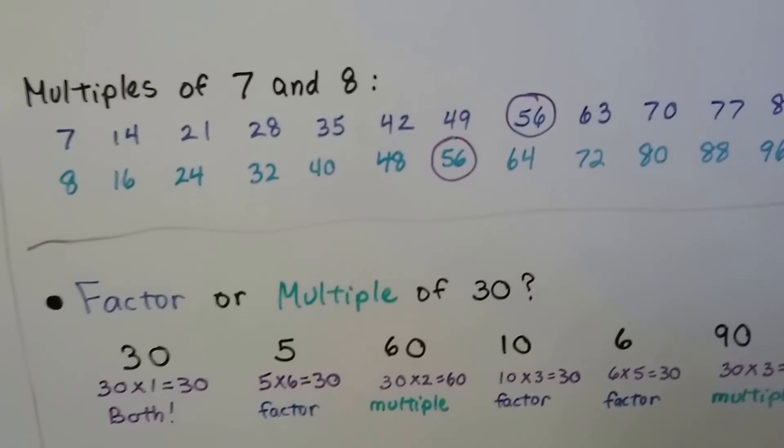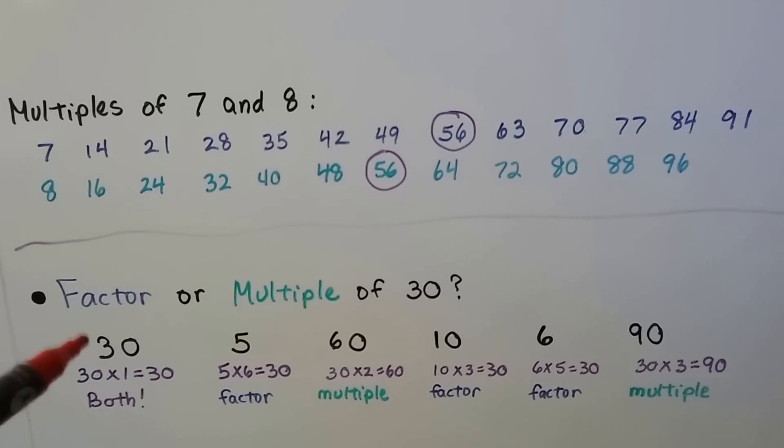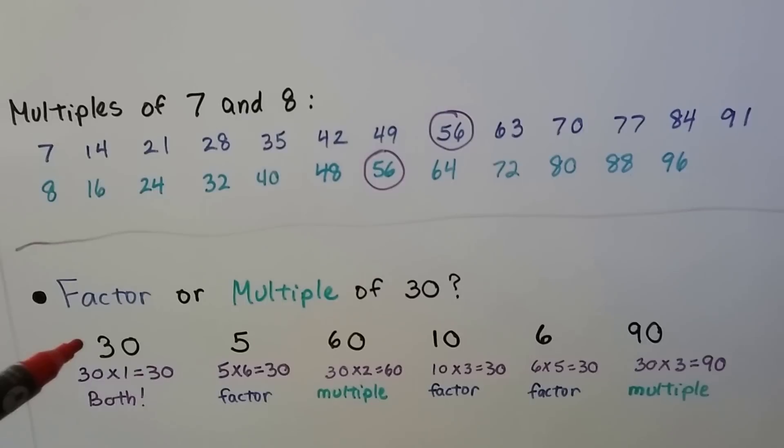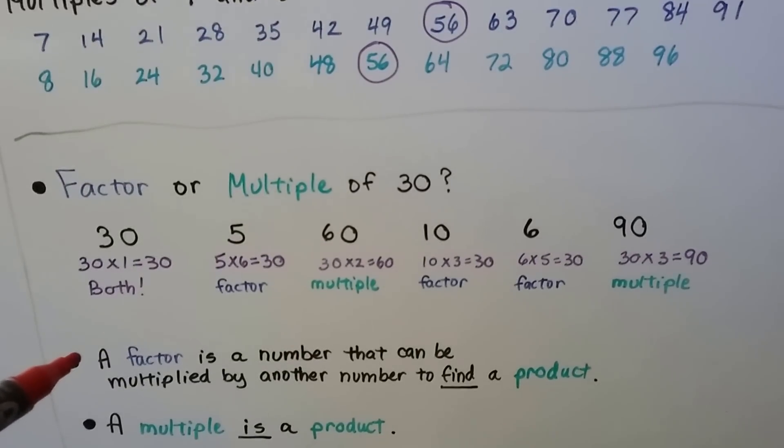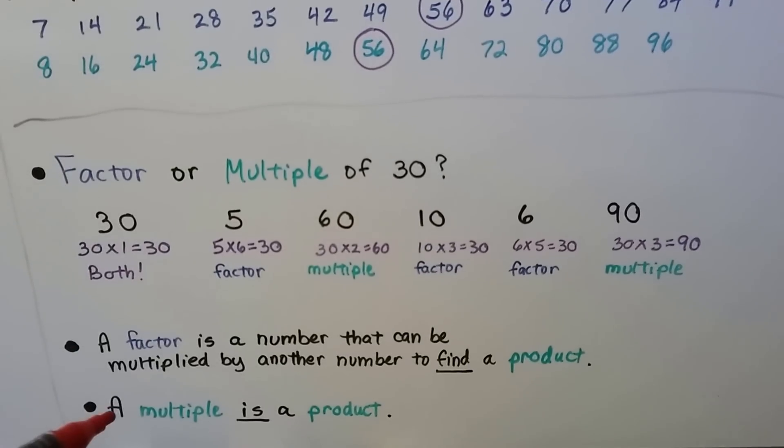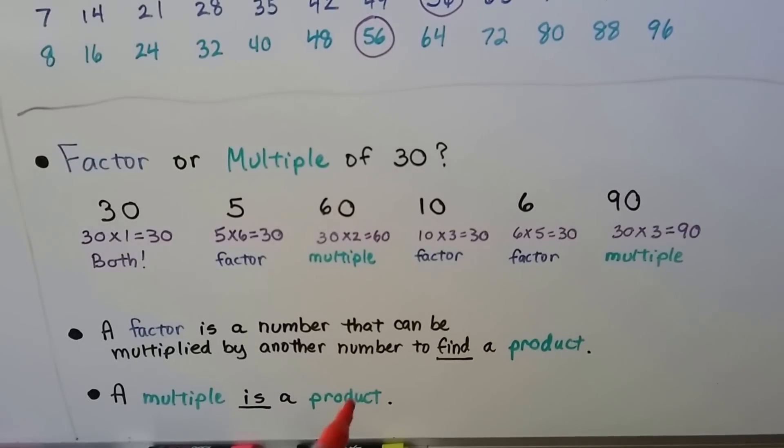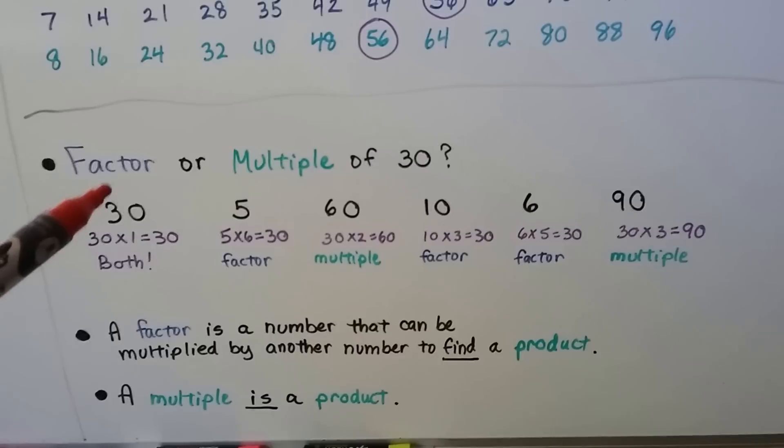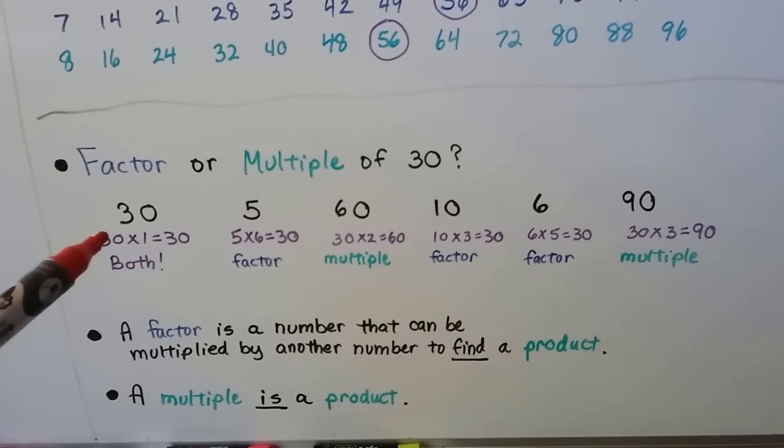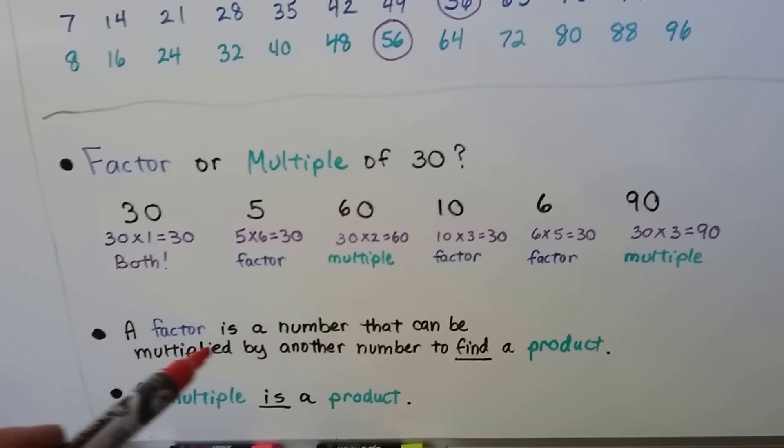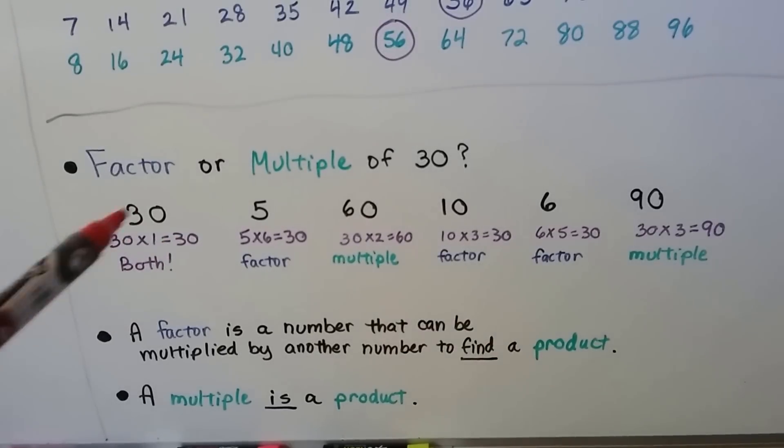So let's figure this out. We want to know if they're factors or multiples of 30. 30, is it a factor or multiple of 30? Well, a factor is a number that can be multiplied by another number to find a product. A multiple is a product. So if it's the answer, then it's the multiple. 30 is the answer in 30 times 1, so it's a multiple. But look, it's also a number that's multiplied to get it. 30 times 1 is 30. So it's both a factor and a multiple.